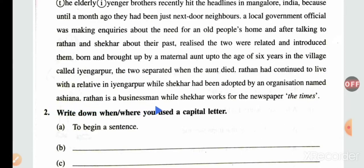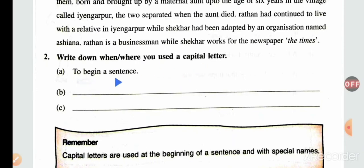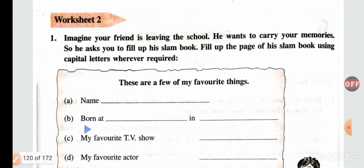Ratan is a businessman while Shekhar works for the newspaper The Times — both 'T' in 'The' and 'T' in 'Times' are capital letters. So we use capital letters to begin a sentence, to start names of people or places, or to start the name of a newspaper. Capital letters are used at the beginning of a sentence and with special names.